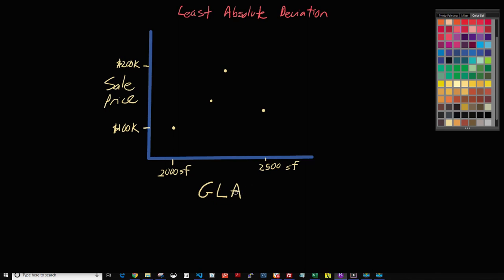The independent variable could be lot size, bedrooms, bathrooms, quality, condition, whatever. And on the y-axis, our dependent variable is sale price. With Theil-Sen regression, what we did was we took every pair of points possible and we drew a line through them.